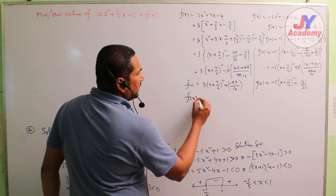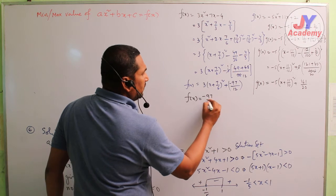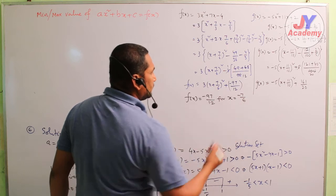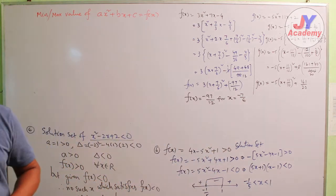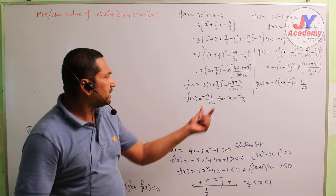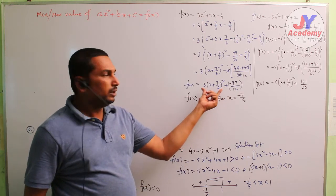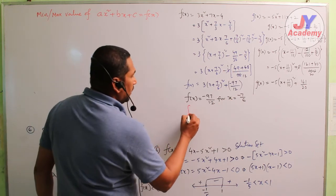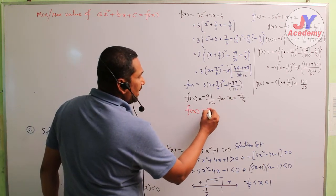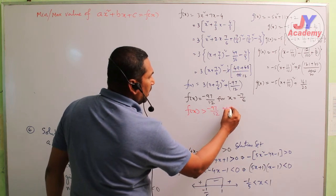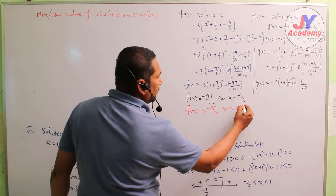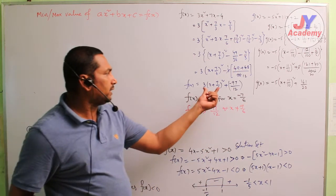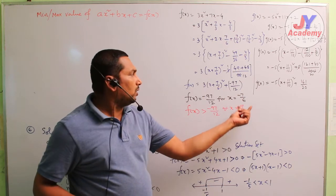So f(x) is equal to minus 97/12 when x = minus 7/6. If you substitute minus 7/6, the square term becomes 0, so f(x) equals minus 97/12. And f(x) is greater than minus 97/12 for all x not equal to minus 7/6.